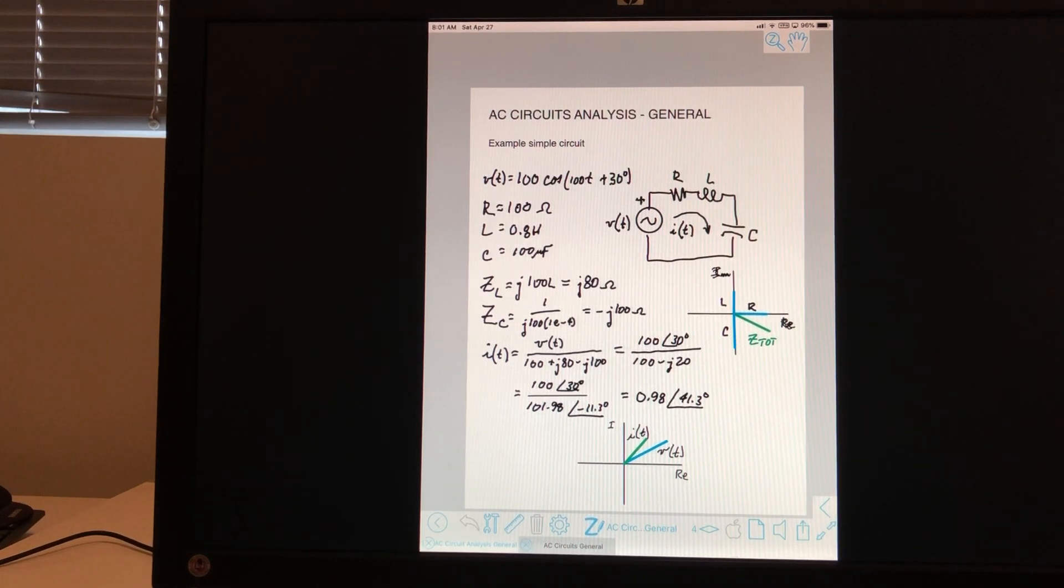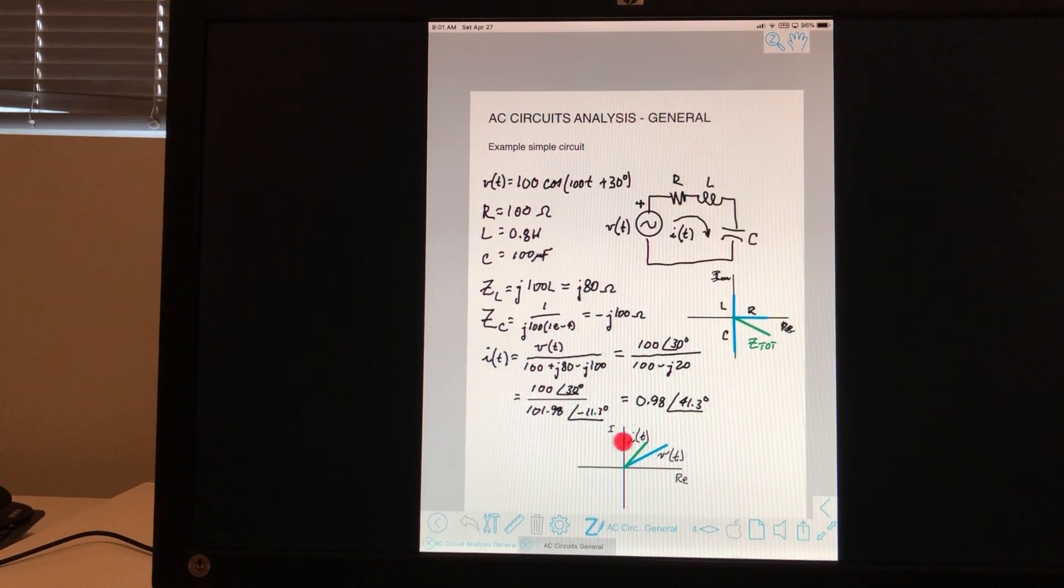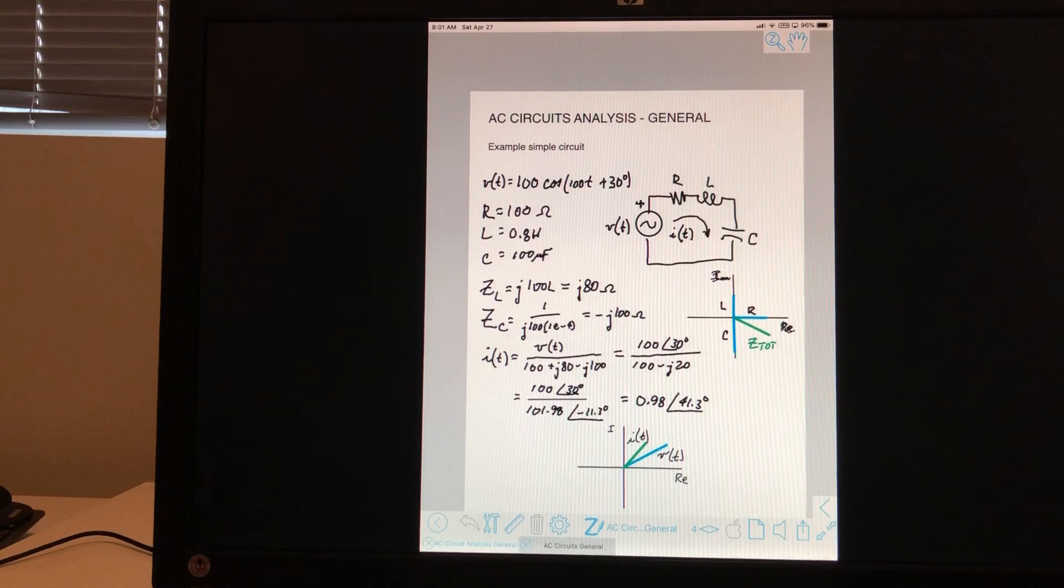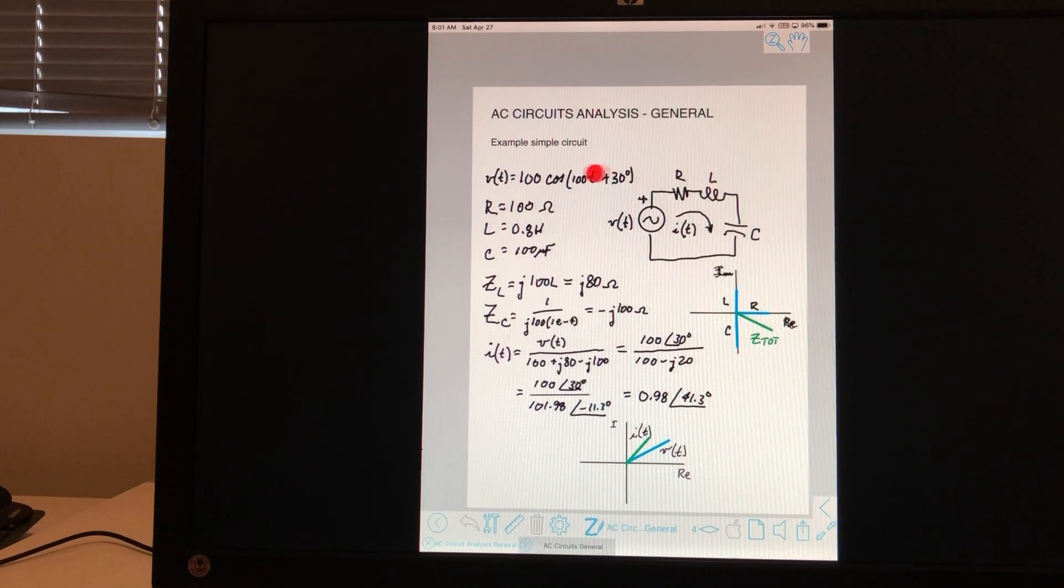The voltage and current are functions of time. And if you remember, what we have here is as time increases, the angle increases all the time. So that's exactly what we're showing right here. Everything inside the parentheses is an angle. And T is increasing all the time.